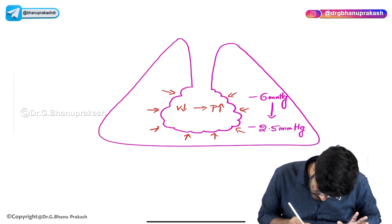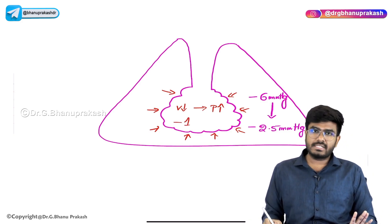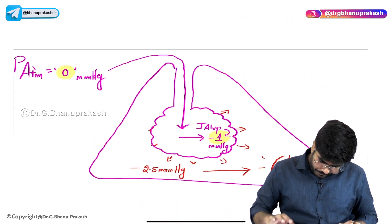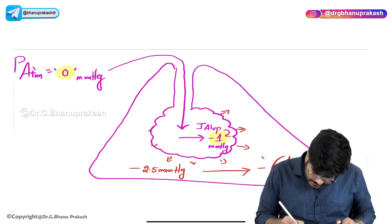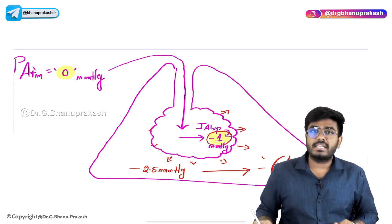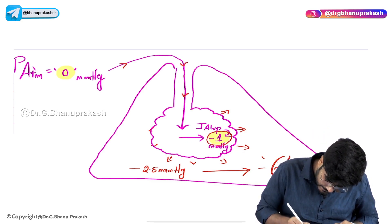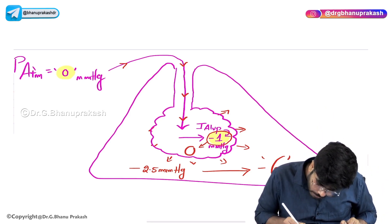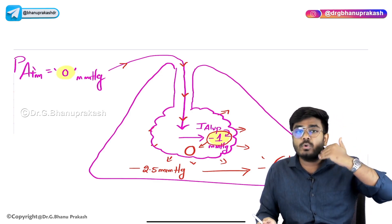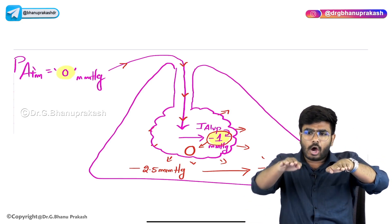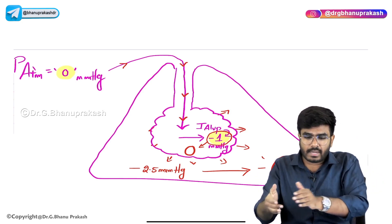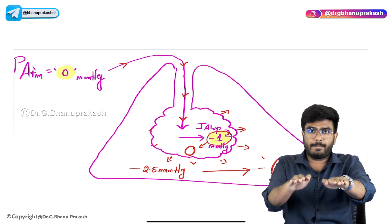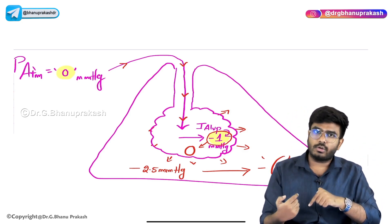During inspiration, the pressure was minus 1 mmHg. Air was entering. With the entry of air, that minus 1 will again become 0 — because as new air enters, pressure increases back toward equilibrium. Air always moves toward lower pressure, so from the atmosphere, air enters into the lung until equilibration happens. Outside is 0, inside also becomes 0. At the end of inspiration, the pressure comes back to 0.